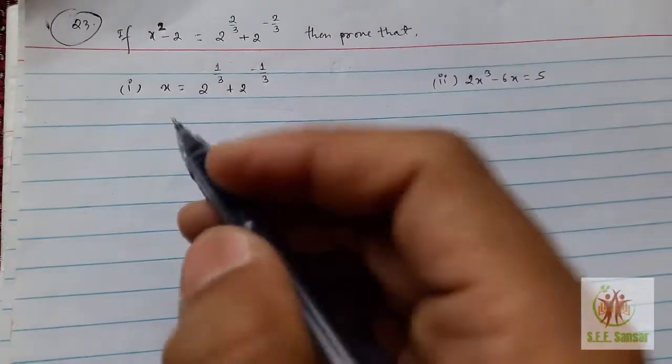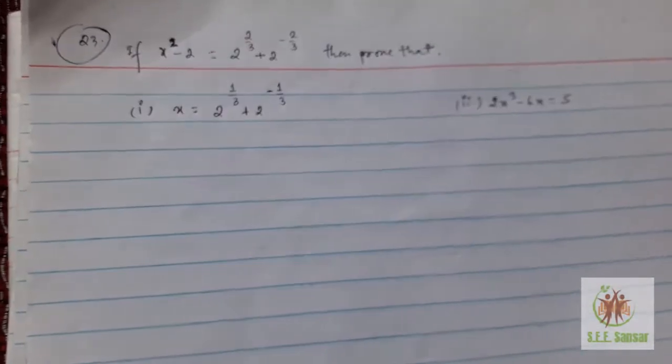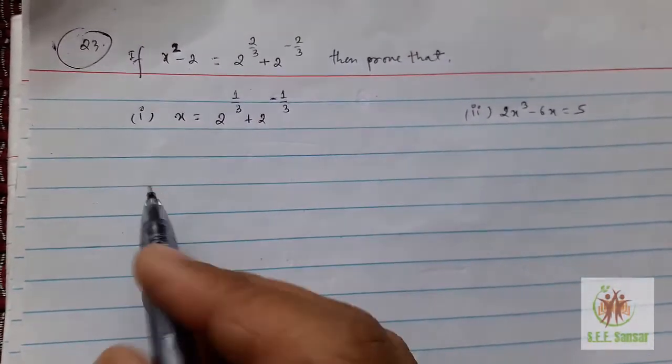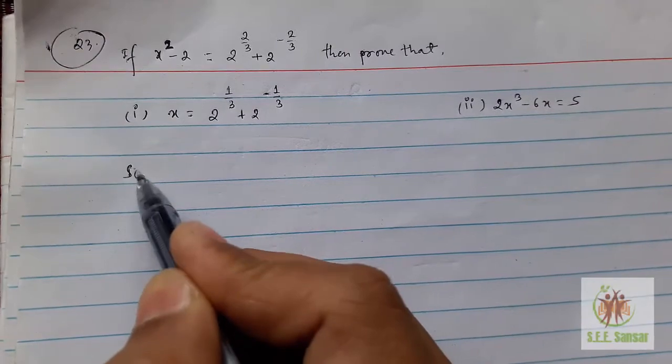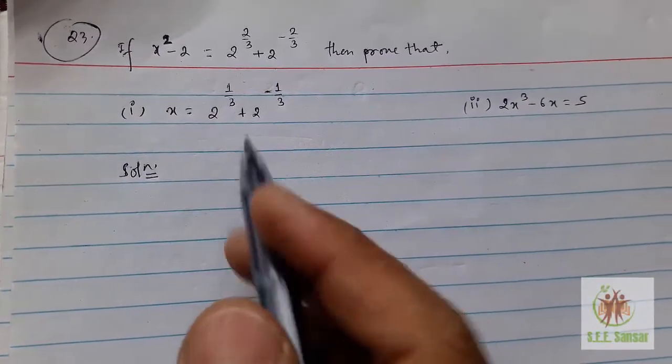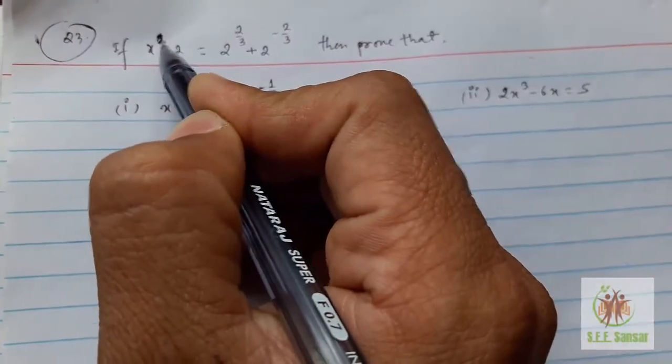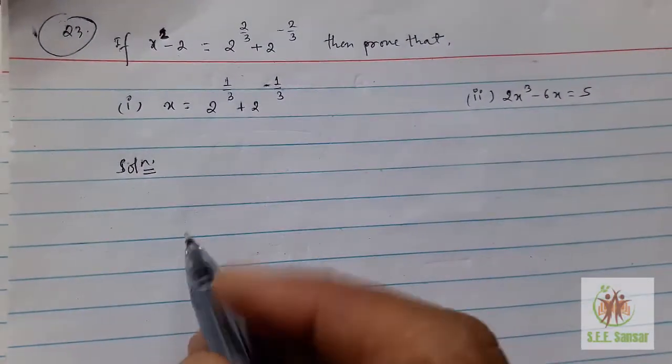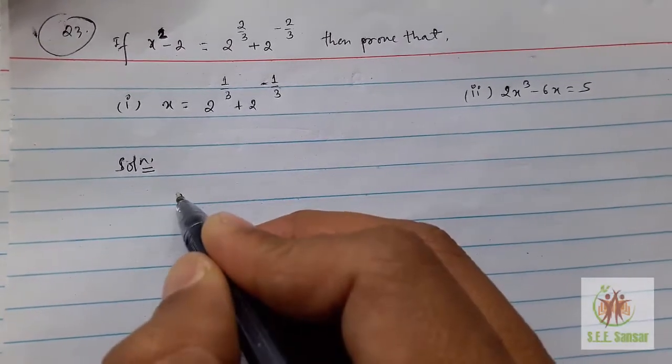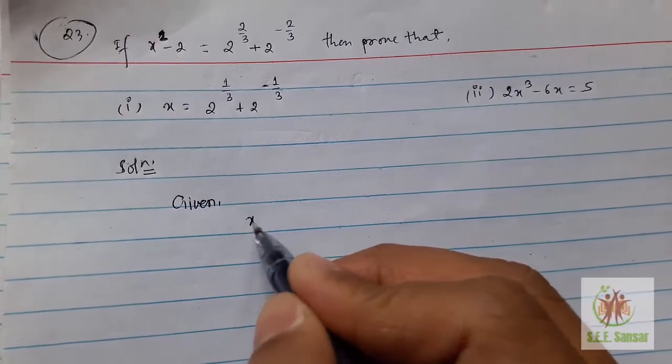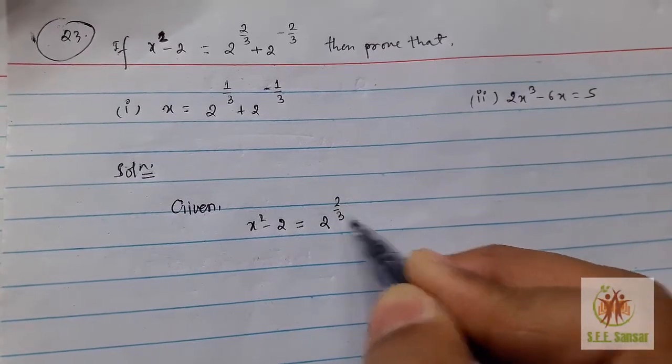Okay, this is minus 1/3. So now let's solve this. For question number one, to prove this one, solution: given x² - 2.